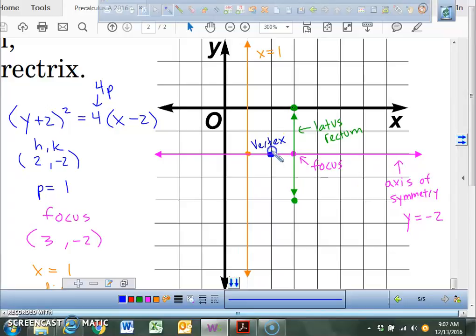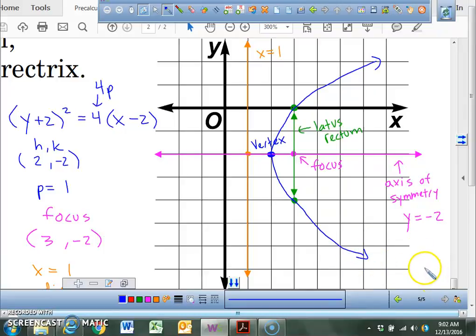So right here, through the vertex, what I want you to do is carefully draw your parabola that goes through this point. And carefully draw going through this point right here. All I'm looking for when you guys are graphing these is I'm looking for the vertex. I'm looking for your focus. I'm looking for this line called the directrix. I'm looking for this line called the axis of symmetry. And I'm looking for these two points that are created from the distance of the latus rectum. So right now you should have all the information you need for a parabola.